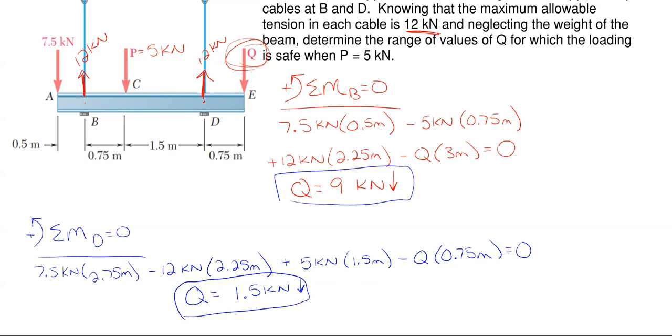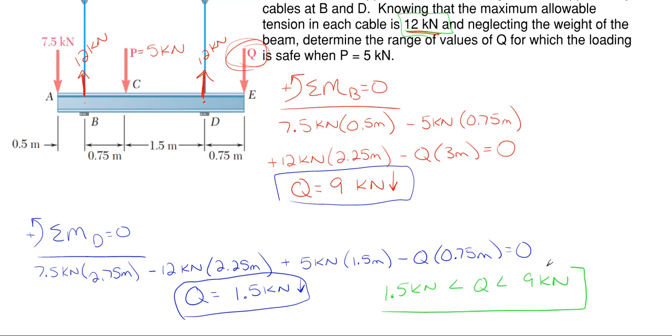So using this one and this previous answer up here, we can get a range of Q such that each of these cables does not go over 12 kilonewtons of force because what we have found are the limits for each of these. So with 1.5 kilonewtons of force, Q must be larger than that or less than 9 kilonewtons. So anything in this range will produce some value in the cable less than 12 kilonewtons of force. 1.5 will produce the maximum amount in B. The 9 will produce the maximum amount in D. And that's how you would solve this answer.